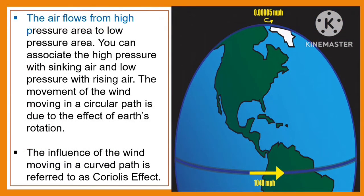The air flows from high pressure area to low pressure area. You can associate high pressure with sinking air and low pressure with rising air. The movement of wind moving in a circular path is due to the effect of Earth's rotation, which is referred to as the Coriolis effect.